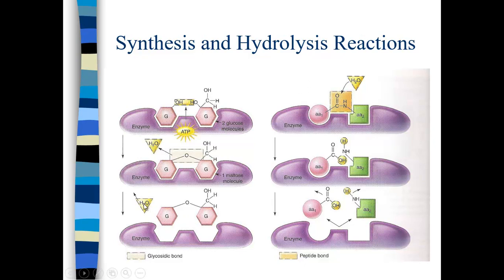Because this is a synthesis reaction and it produces water, sometimes synthesis reactions are called condensation. In hydrolysis, we actually add water. This is two amino acids that form a small peptide. When we add water, that will break down the peptide bond and create a carboxyl group and a separate amino group. This hydrolysis reaction is a lysis — it breaks apart the molecule into its component amino acids and involves the addition of water.